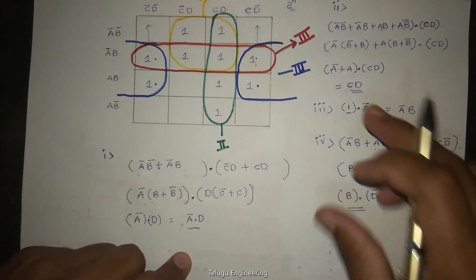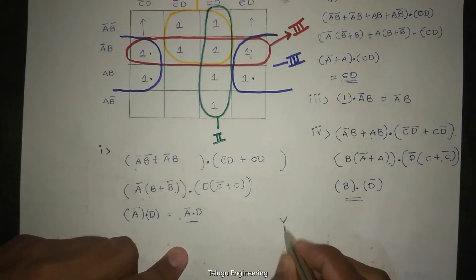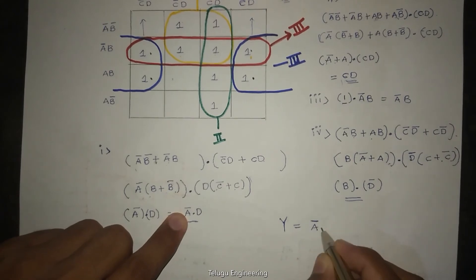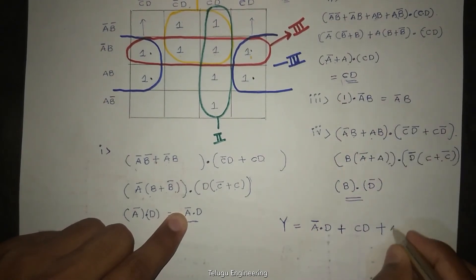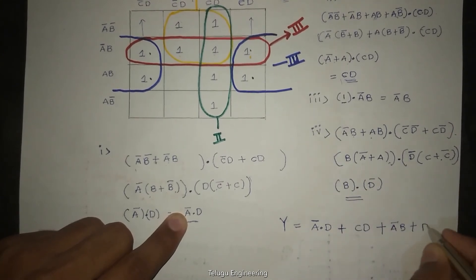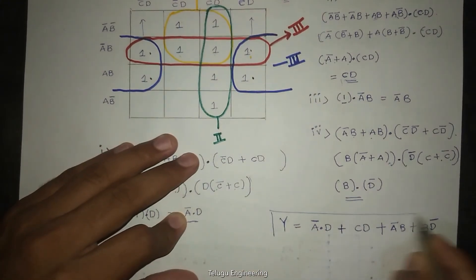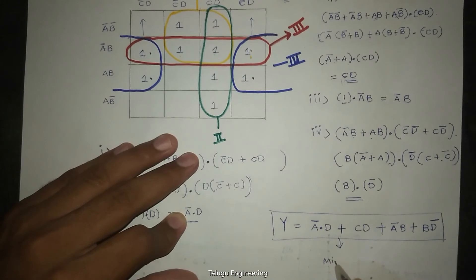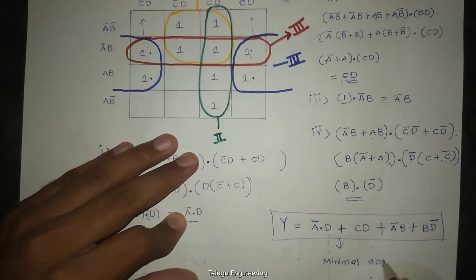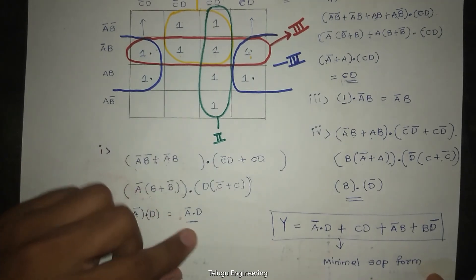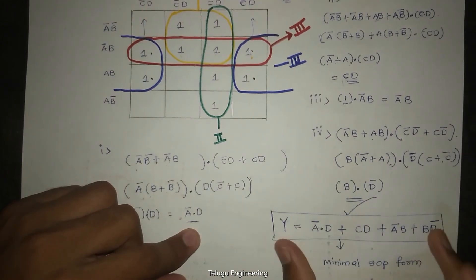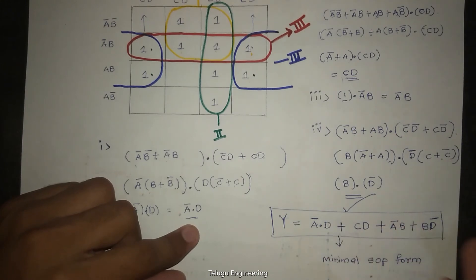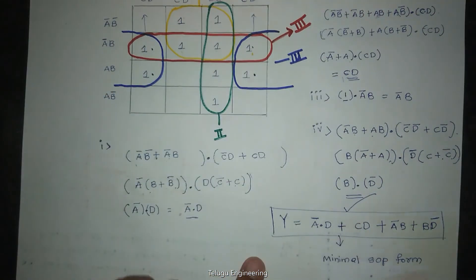So in this way, we have four groupings, four simplified values. So we have output function Y equal to A bar dot D plus CD plus A bar B plus B bar D bar. So here this is the output function. This is in the form of minimal SOP form. Canonical form involves A, B, C, D all, but only the values involved here. This is minimal SOP form. I'm not going to further solve this, but this is enough for building a circuit. So for other problems, like four AND gates use this. Like a truth table, K-map - mention the circuit and run it.